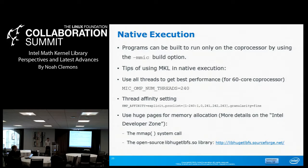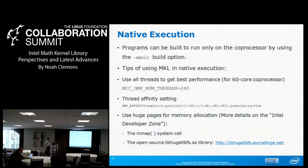Native execution is by far the simplest mode — it needs to be highly parallel, but it is the simplest. Programs can be built to run just on the coprocessor by adding one build option. You then build it, drop your executable on there, drop your data set, and execute by logging directly into the card. For both your MKL code and code in general in native mode, use the maximum number of threads with the thread affinity setting. Intel Developer Zone's Xeon Phi portal has best-known methods for native, compiler-assisted offload, and automatic offload.